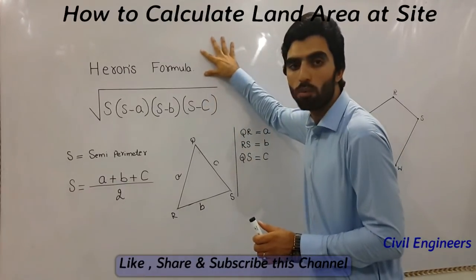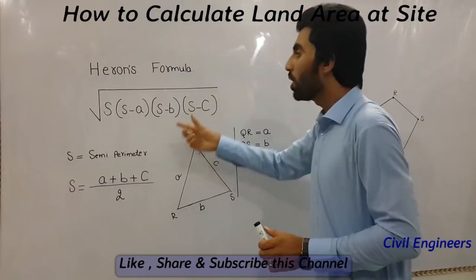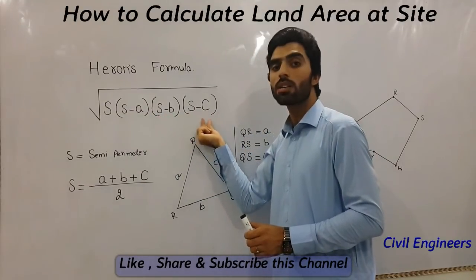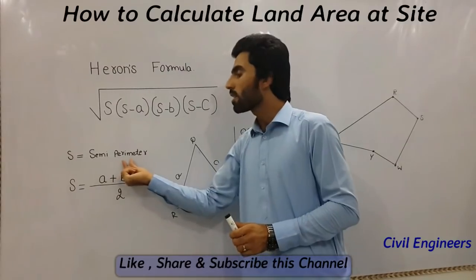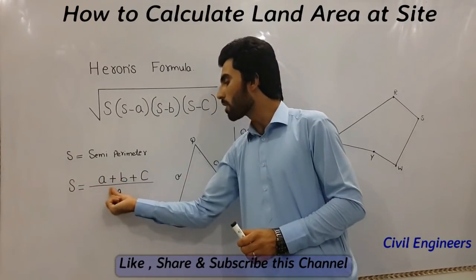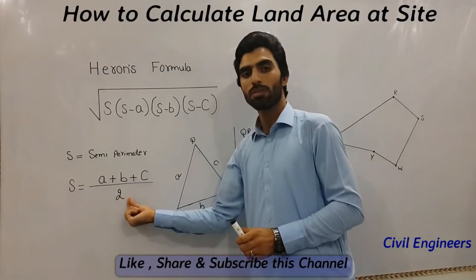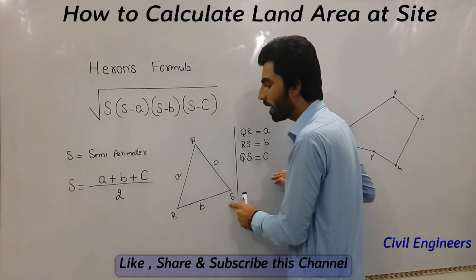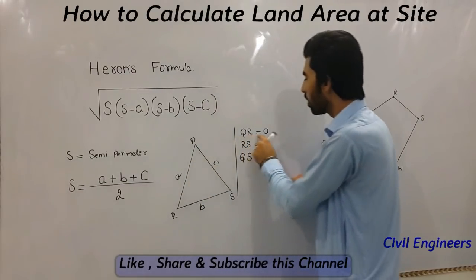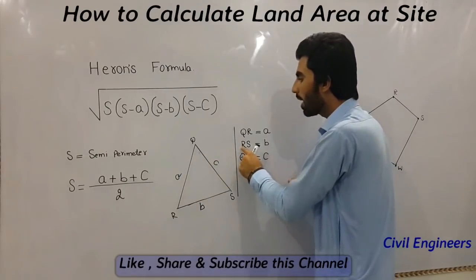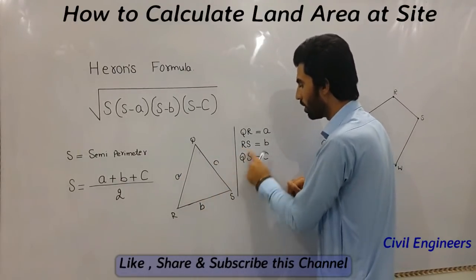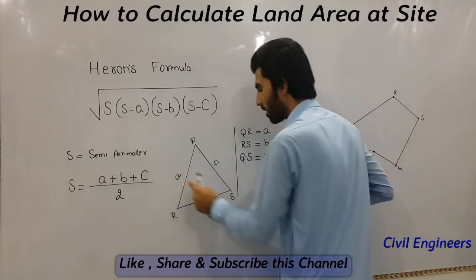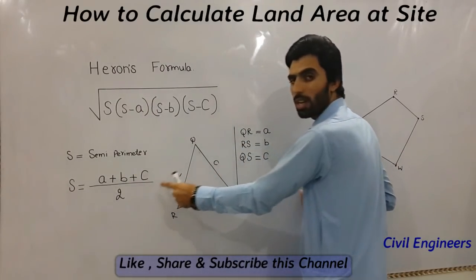To find out the land area at site, we have to use Heron's formula, which is: Area = square root of S(S-A)(S-B)(S-C), where S is the semi-perimeter and S equals (A + B + C) divided by 2. Here is a simple triangle QRS, where QR equals A, RS equals B, and QS equals C.